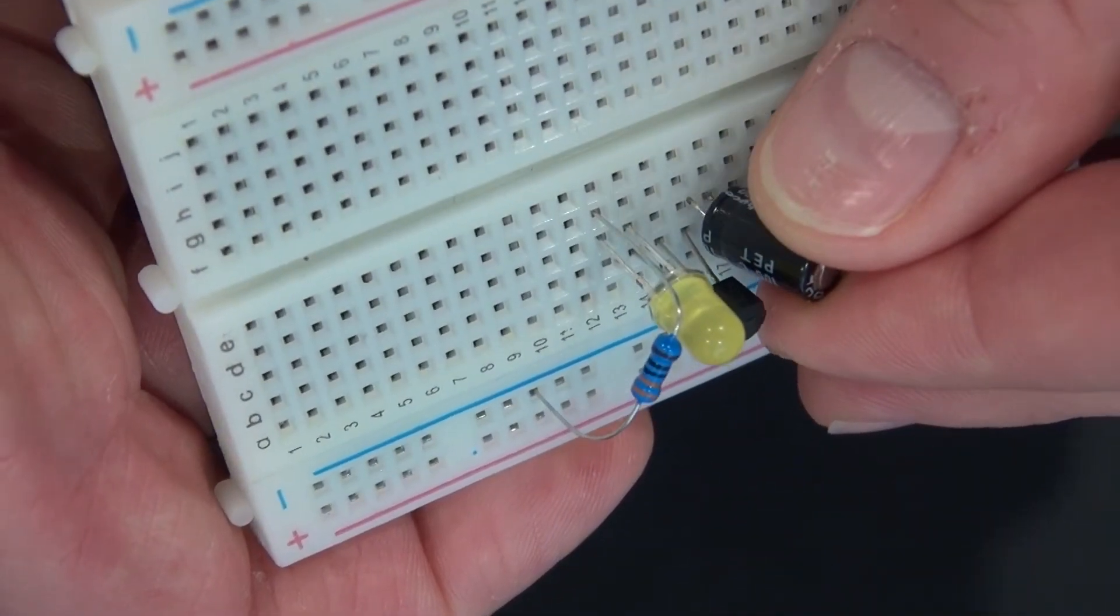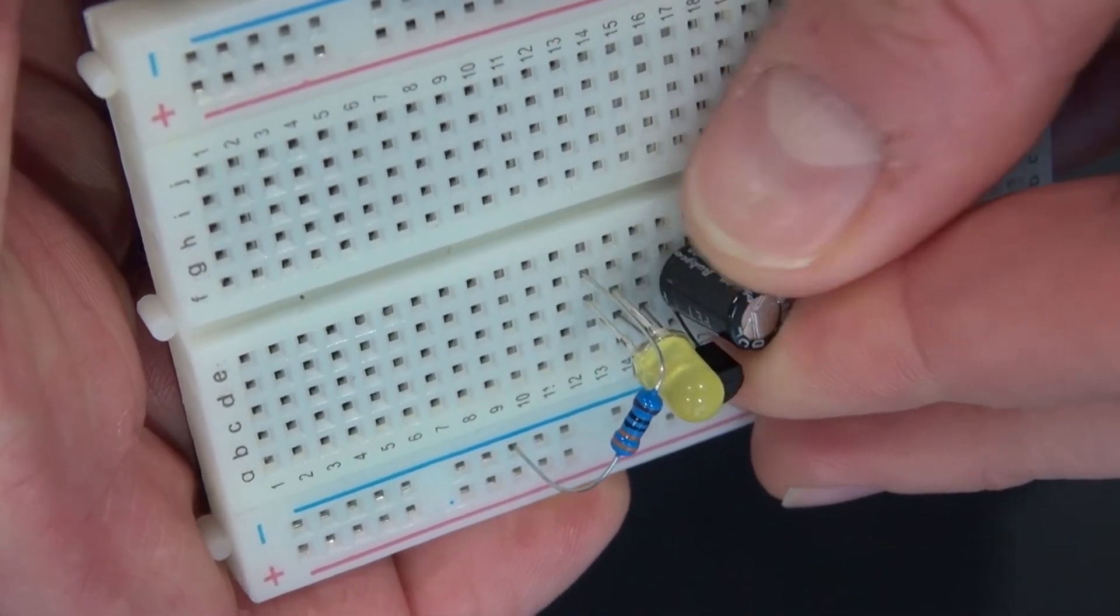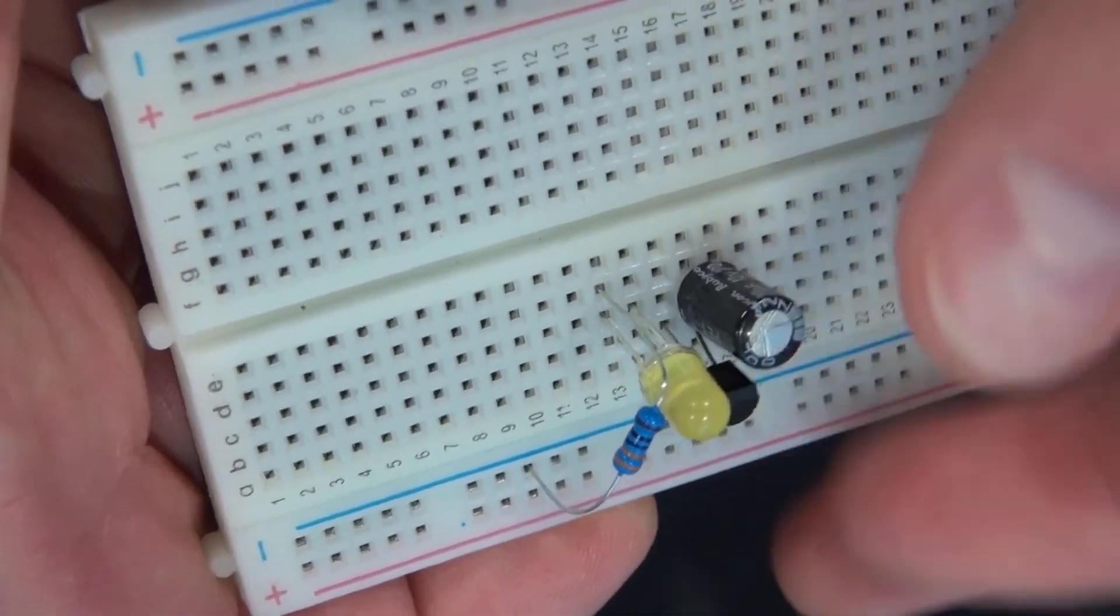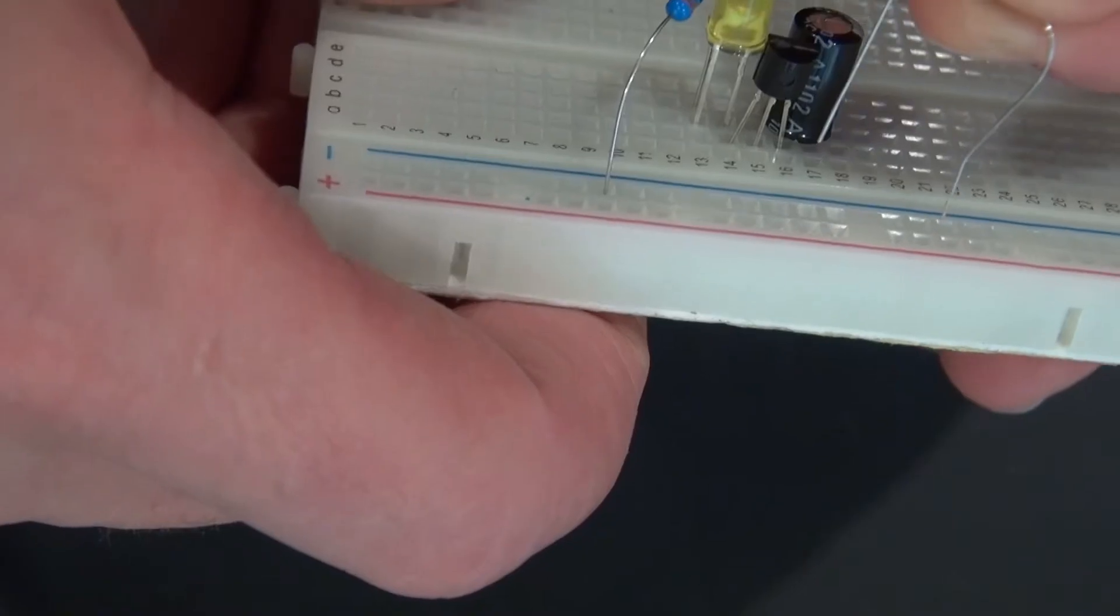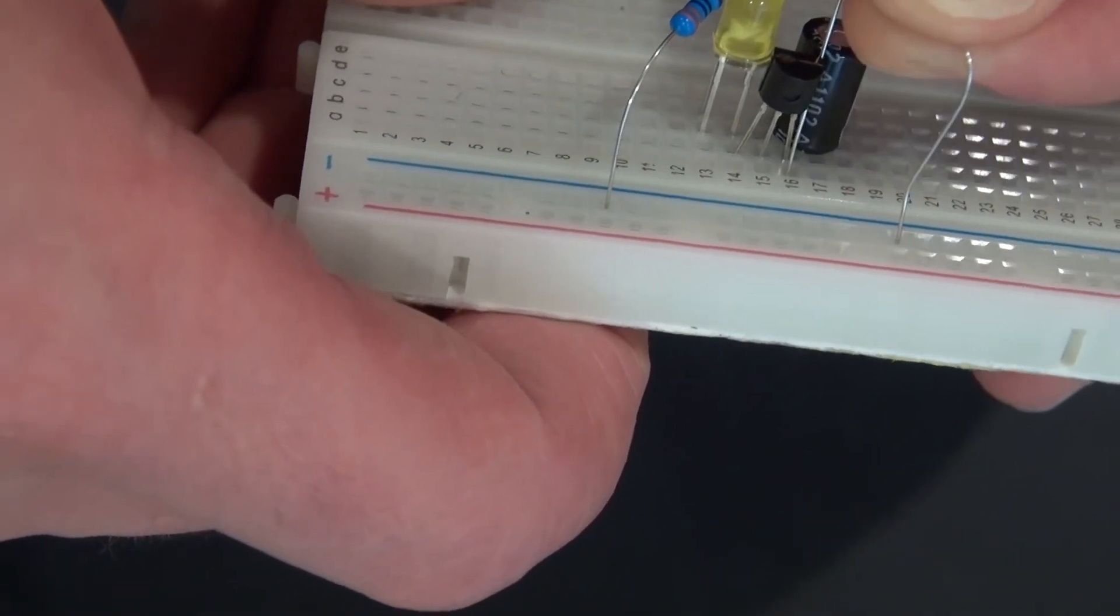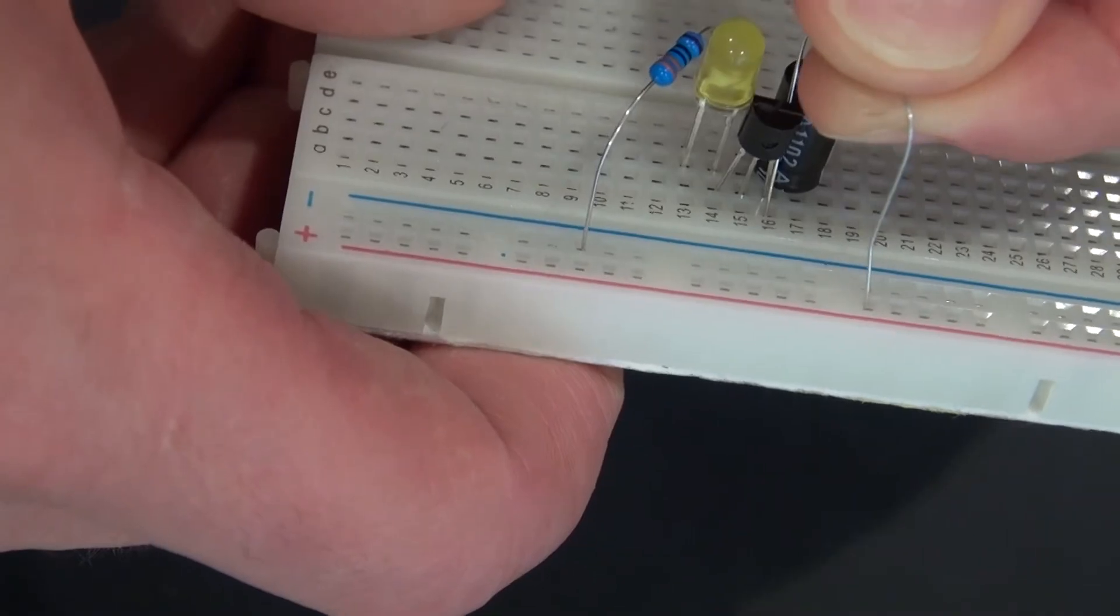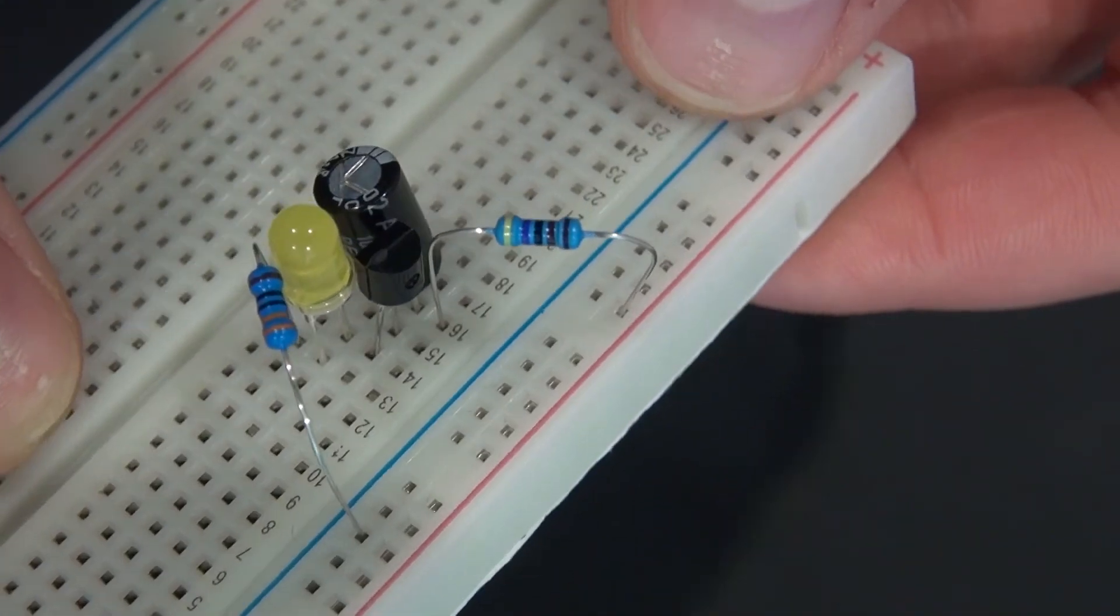Take your capacitor and connect the positive side of the capacitor to the emitter of your transistor. Now take your 4.7k ohm resistor and put it on the emitter of your transistor and connect it to the positive rail.